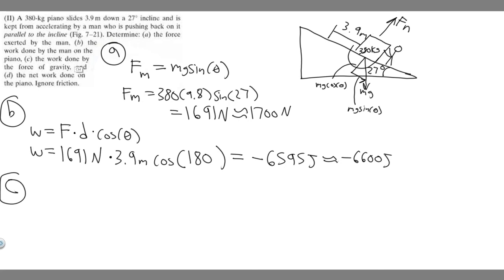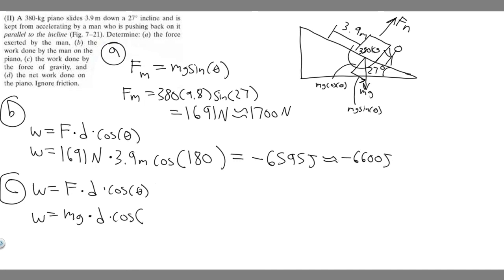For part (c), the work done by the force of gravity: W = F × d × cos(θ). The force here is gravity, which is mg acting straight down. The piano moves along the incline at 27 degrees from horizontal, so the angle between the straight-down gravity vector and the direction of motion along the incline is 90° − 27° = 63°.